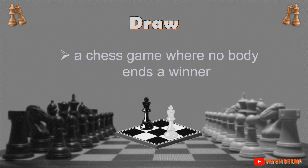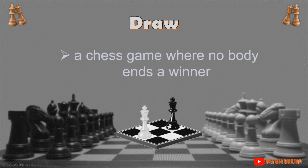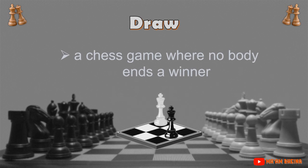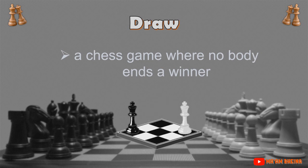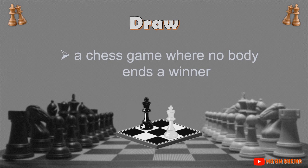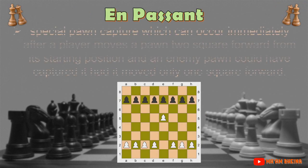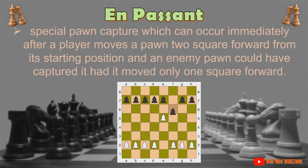A Draw is a chess game where nobody ends as a winner. A game may end in a draw at any time if one player offers a draw and the other accepts. If the exact same position is repeated three times during a game with the same player to move each time, the player next to move may claim a draw. En passant is a special pawn capture which can occur immediately after a player moves a pawn two squares forward from its starting position and an enemy pawn could have captured it had it moved only one square forward.